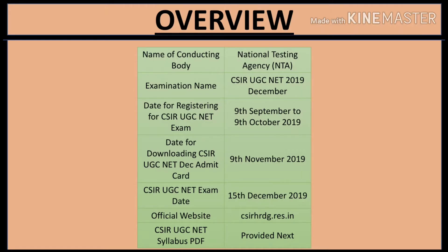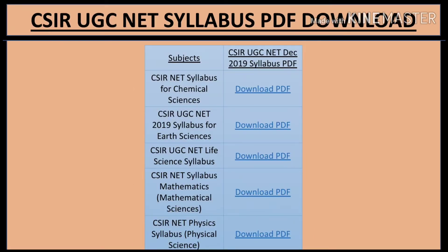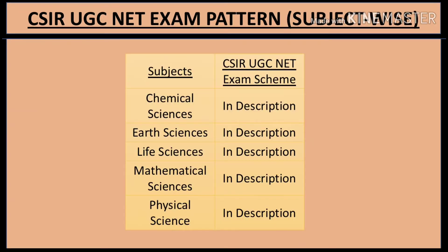The syllabus PDF and exam pattern links have been provided in the description. The exam pattern and syllabus are available separately. If you click on any link in the description, you will get them one by one. You can download the UGC NET syllabus PDF for chemical science, earth science, life science, mathematics, and physical science. Direct links are provided in the description for each subject's PDF and exam pattern.